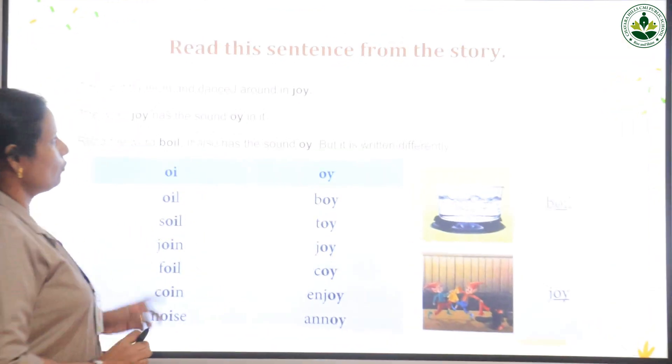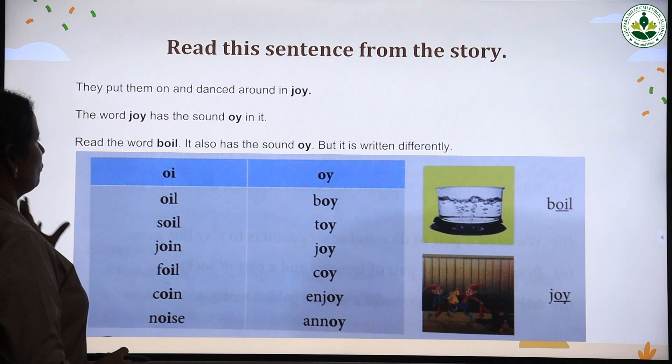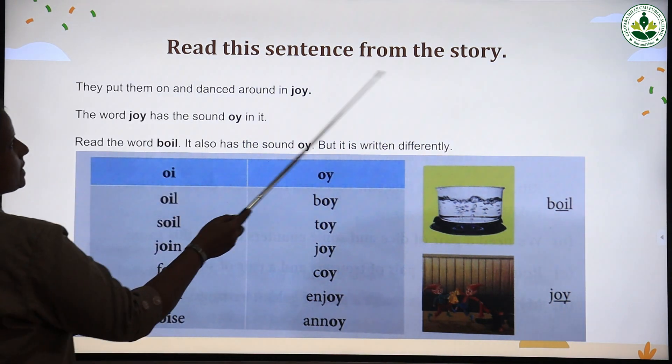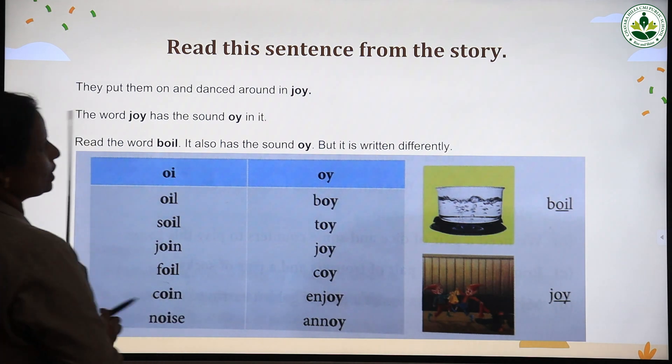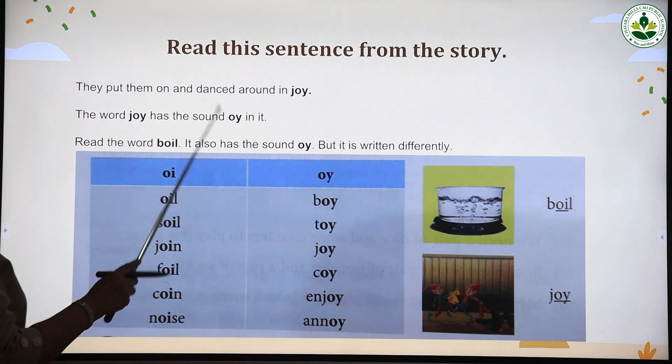In phonic junction, let's find out which sound comes today. Here you see, read this sentence from the story: They put them on and danced around in joy. The word joy, j-o-y, has o-y in it.